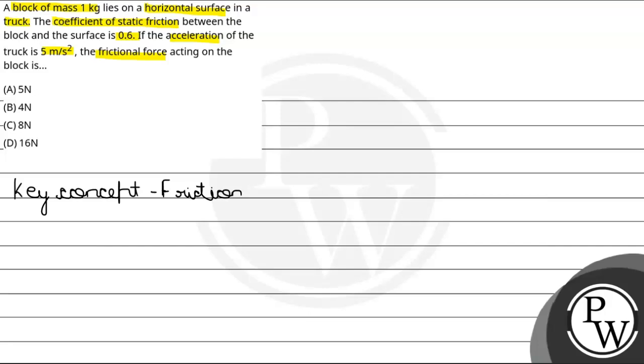So, diagram draw. So, we have said that it is a truck, which is in forward direction with acceleration 5 meter per second square. And this block is on it. So, truck moves in forward direction.